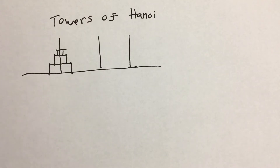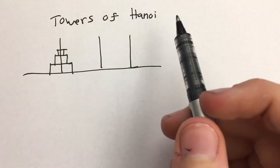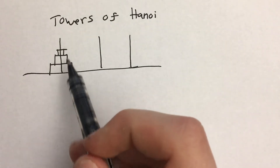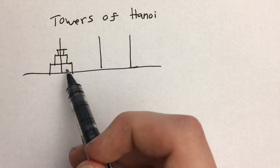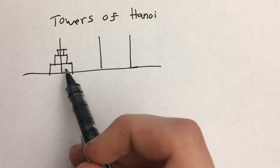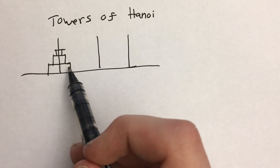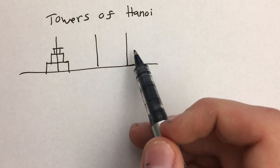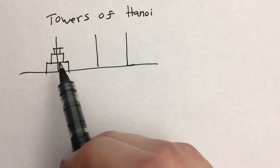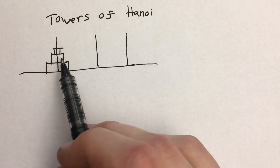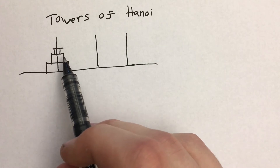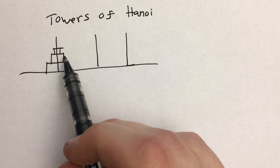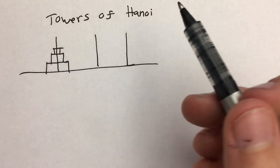In this video, we're going to talk about the Towers of Hanoi, which is a classic problem. It's basically N blocks — in this case we have three discs on one peg — and we want to move all three discs to another peg. You can only move one disc at a time, and you cannot place a larger disc on top of a disc that's smaller than it.